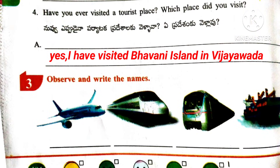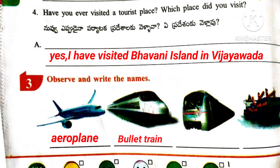Roman number 3: Observe and write the names. First picture: Aeroplane. Next one: Bullet Train. Next one: Normal Train. Next one: Ship.